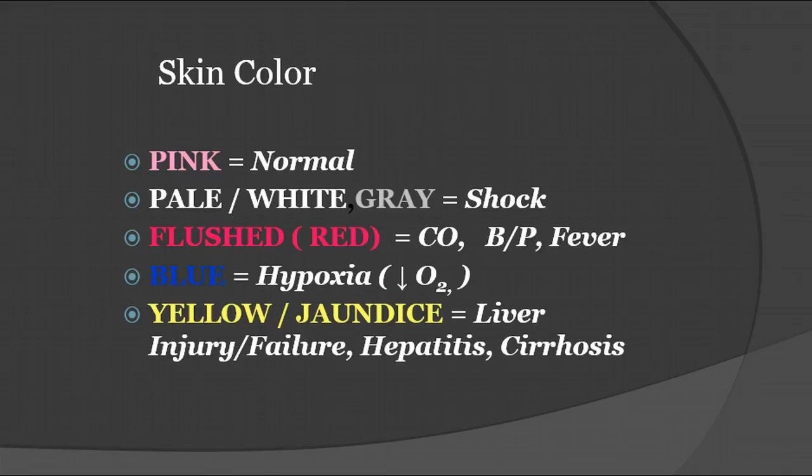Skin color normally should be pink. If it's pale, white, or gray, that could indicate shock. If it's flushed or red, there could be carbon monoxide poisoning, elevated blood pressure, or fever. If the patient is blue, oxygen is usually low - they could be hypoxic. You'll see the blue color more in kids; in adults it seems to be more of a grayish color. Yellow and jaundice - obviously that's going to be liver injury or failure, hepatitis, or cirrhosis.